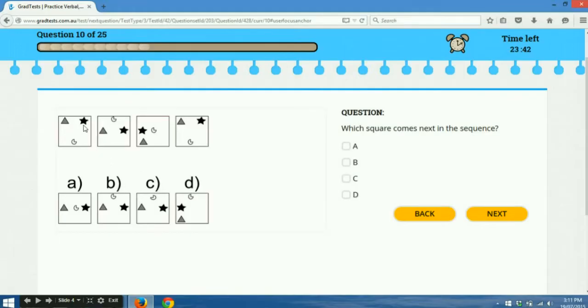So now the final shape, we've got the star. So let's figure out what it's doing. So it's starting in the top right, the middle on the right, middle on the left, back to the top right, so then we're going to be middle on the right, just like the second step. So out of B and D, which one of those is correct? It's B. Okay, so B has to be the correct answer.